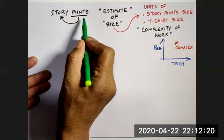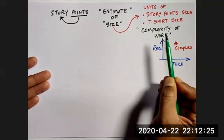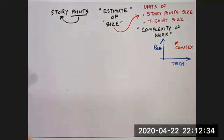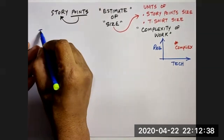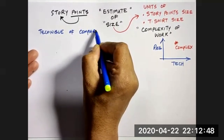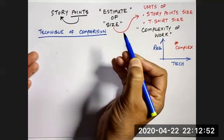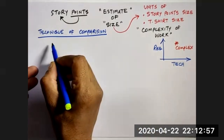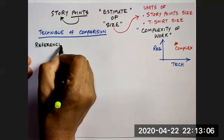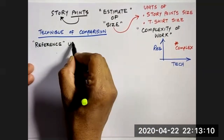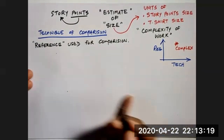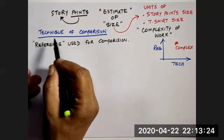In order to come up with point estimation — which is nothing but identifying the complexity of the work done — in a complex zone it is very difficult to identify the size. So what we do is use a technique of comparison: looking at an existing item as a reference. Like our meter scale, we need to have a reference.